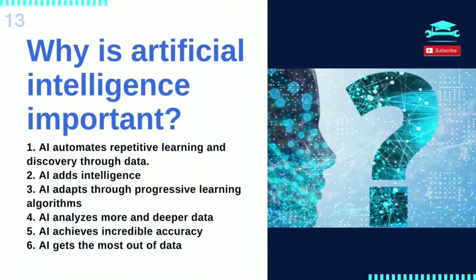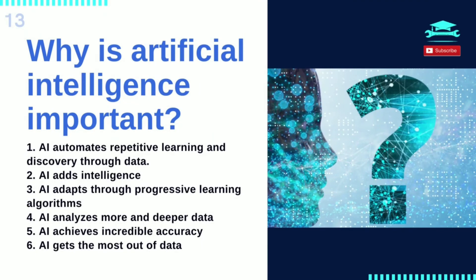AI automates repetitive learning and discovery through data, but it is different from hardware-driven robotic automation. Instead of automating manual tasks, AI performs frequent, high-volume, computerized tasks reliably and without fatigue. AI adds intelligence to existing products — in most cases, AI will not be sold as an individual application; rather, products you already use will be improved with AI capabilities, much like Siri was added as a feature to a new generation of Apple products. AI adapts through progressive learning algorithms to let the data do the programming, finding structure and regularities in data so that the algorithm acquires a skill and becomes a classifier or a predictor.